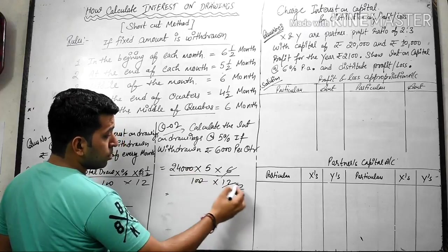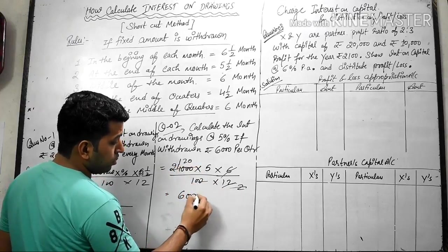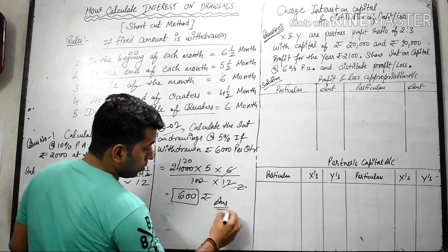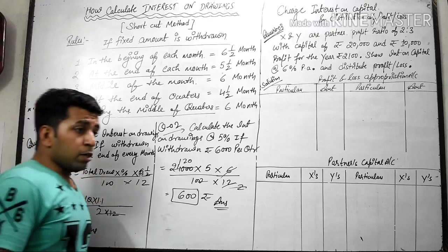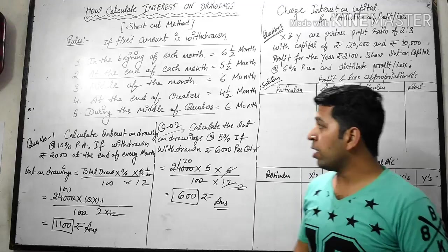So if this is middle of quarter, calculation gives us 600 rupees. That is the answer. Okay guys, so here we have calculation of interest on drawing with shortcut method. Now we have interest on capital.